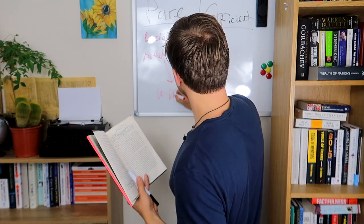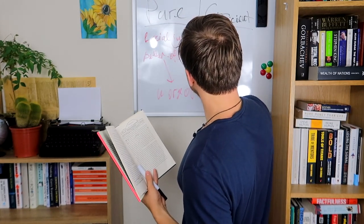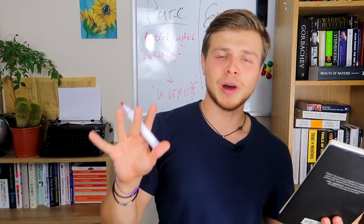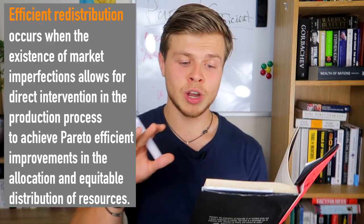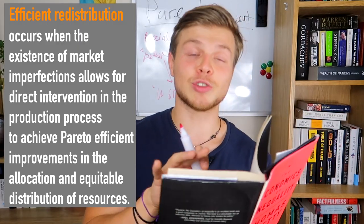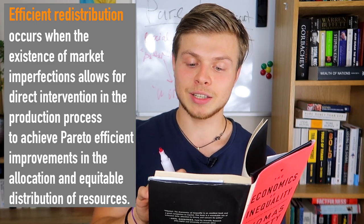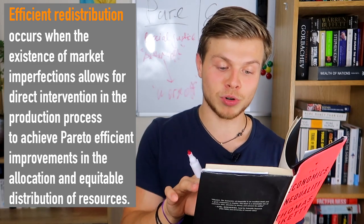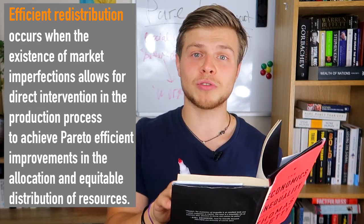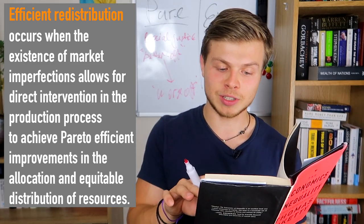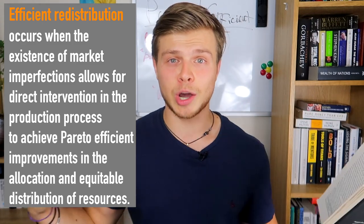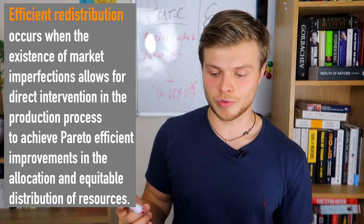From better off to worse off — it makes sense. Efficient redistribution occurs when the existence of market imperfections allows for direct intervention in the production process to achieve Pareto efficient improvements in the allocation and equitable distribution of resources.